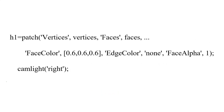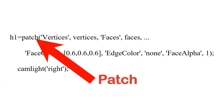The previous code has now been replaced with the following. The main function is now Patch, which uses the STEP file for displaying the object in 3D. The CamLight function adds a light source at the camera's position, creating reflections on the surface of the structure to enhance the perception of depth in the 3D model.